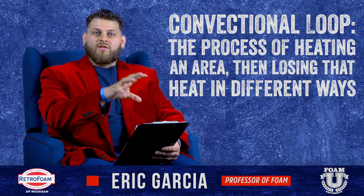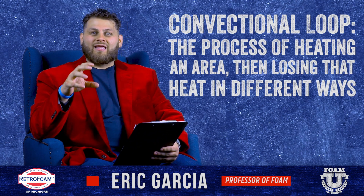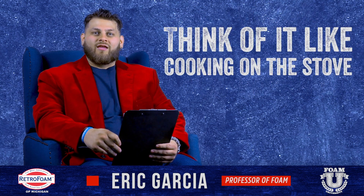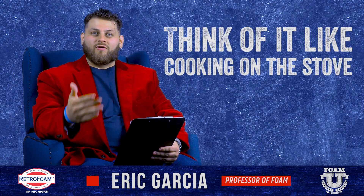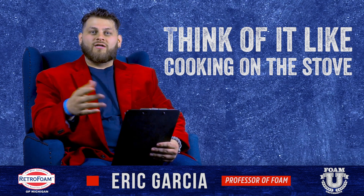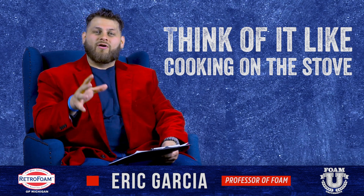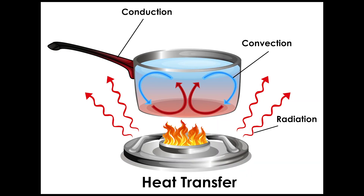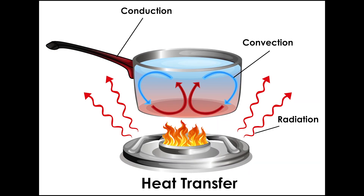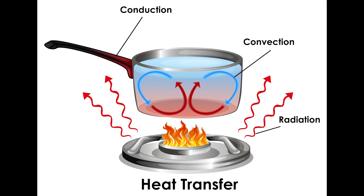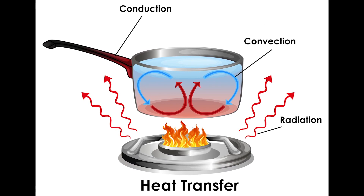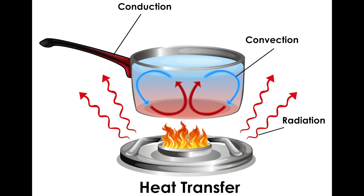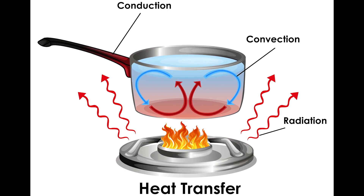Think about heating an area — how can that heat get lost out of that area? One thing to think about is heat passing from one structure to another, like when you cook. Think about putting a steak on a frying pan: you turn the heat on, put the pan on the stove, that pan gets hot. Once the pan gets hot, you put the steak on, and the steak absorbs the heat from the pan. That's how we cook food.